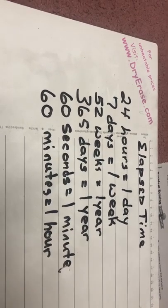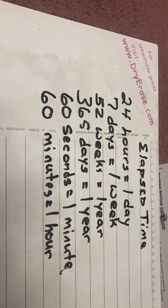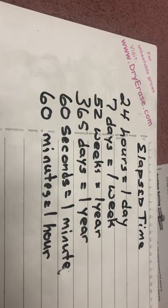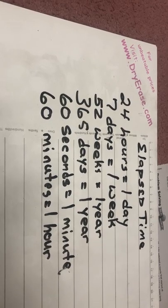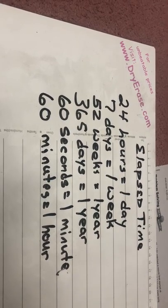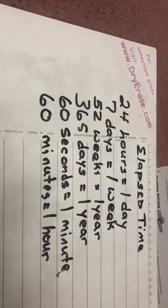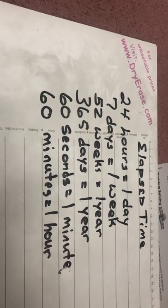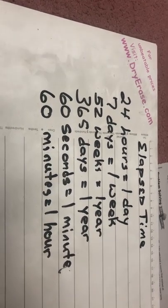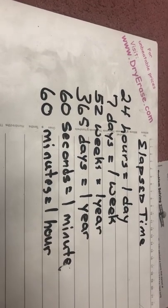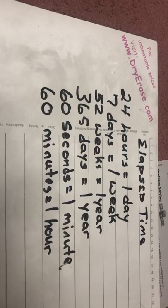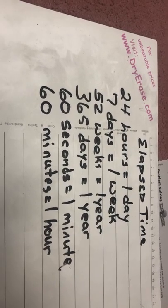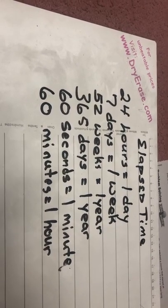So, elapsed time — these are the conversions you need to know: 24 hours equals one day, seven days equals one week, 52 weeks equals one year, 365 days equals one year, 60 seconds equals one minute, 60 minutes equals one hour. Pause the video and write those down.